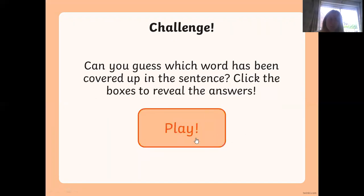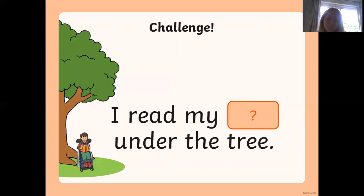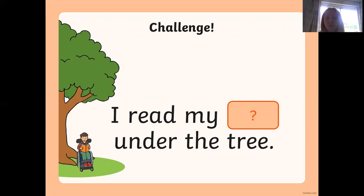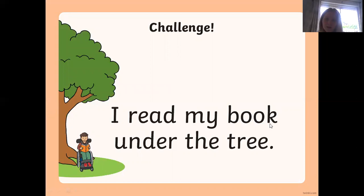Now this one might be a little bit trickier today, because some of the words we will need to change from the short 'oo' sound to an 'uh' sound as well. But if you're writing them, please make sure you spell them with two o's together to make the short 'oo' sound. Let's go. 'I read my ___ under the tree.' What is he reading? Can you have a go at writing that word? Remember the 'oo' sound — even though it sounds like an 'uh', we need to use the short 'oo' spelling. Let's see what it is — the word is 'book'. I read my book under the tree.